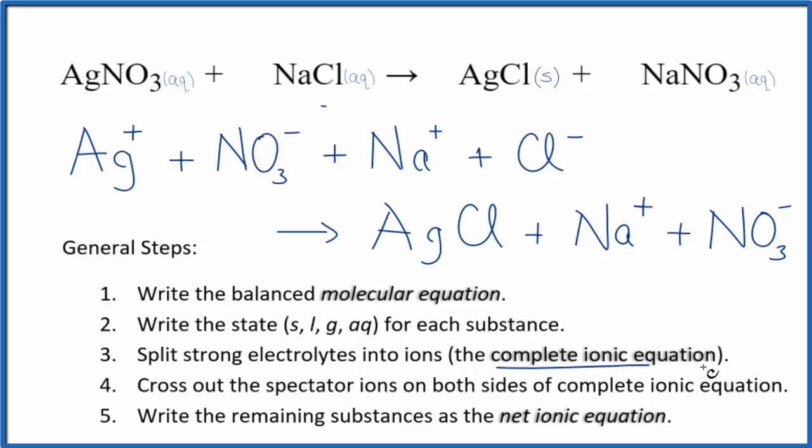So for our complete ionic equation, it has all of the strong electrolytes split up. All the soluble compounds are split up into their ions, and then the solid, that's left together as a solid. Note that I didn't write the states in here just to make it a little easier to see.